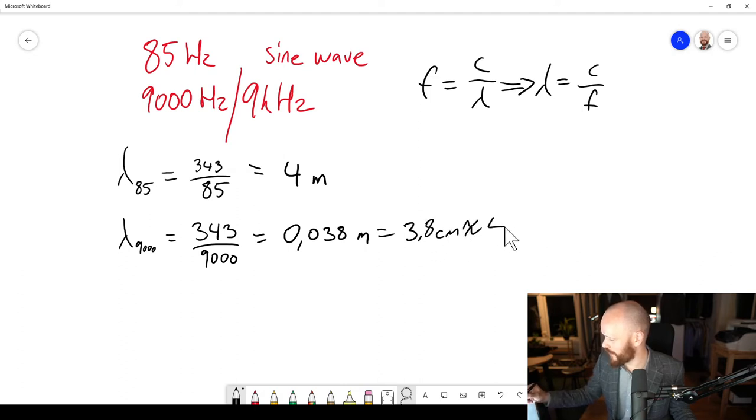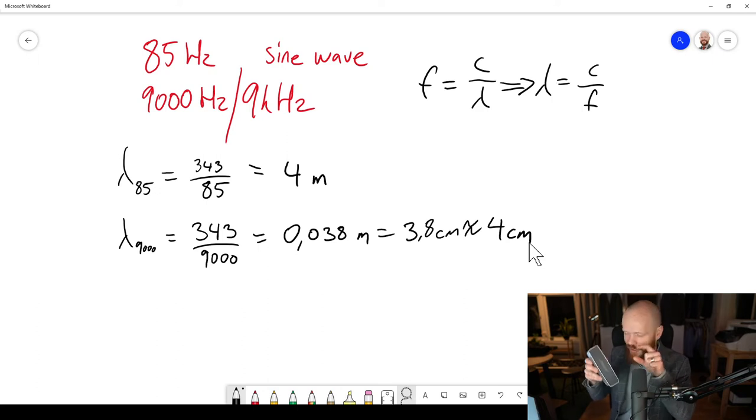We can say it's 4 centimeters instead of 4 meters. Now 4 centimeters in relation to this guy, then this is huge. It's a large sound source that emits a short wavelength and then it's not a point source anymore because that condition is not fulfilled.